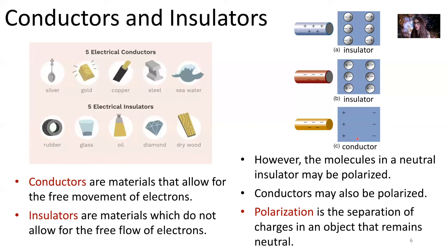Now let's think about how we can polarize a conductor. In the conductor you have electrons that are free to move within the material. We're going to bring in a negatively charged object near the conductor, but we're not going to touch it. The negatively charged object is going to force all of the free electrons inside the conductor to repel from it. Those free electrons will move as far away as they can to the other side of the conductor, leaving an excess of positive charges on the side nearest the negatively charged object. That's one way we can polarize a conductor.